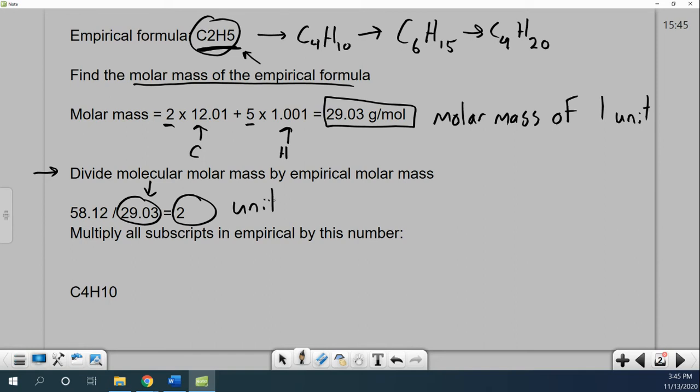I have two empirical formulas, two units. So if my empirical formula was C2H5, and I have two of them, my molecular formula, this would be C4H10. I just double it.